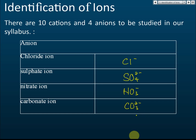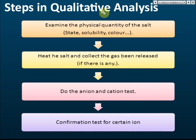Qualitative analysis means we try to identify the elements or the ions in a chemical substance. You don't need to memorize these steps — this is just a reference. First, we examine the physical state of the salt — for example, whether it is a solid, liquid, or gas.